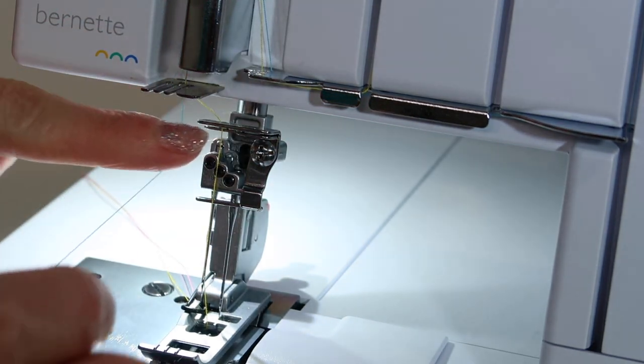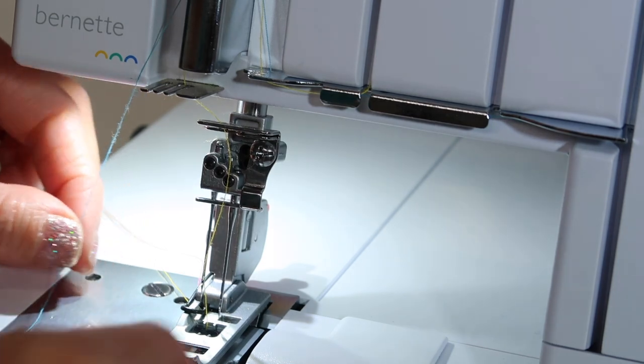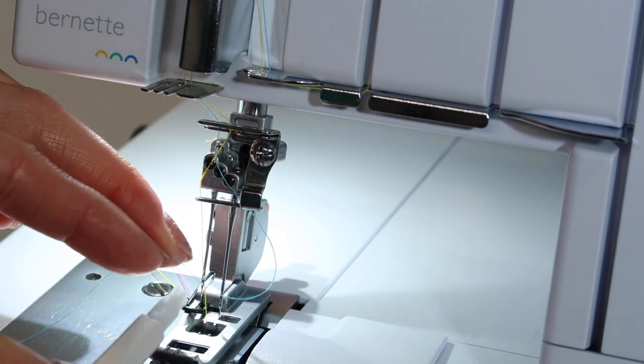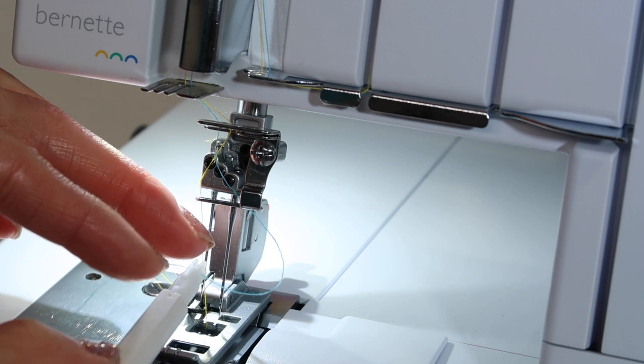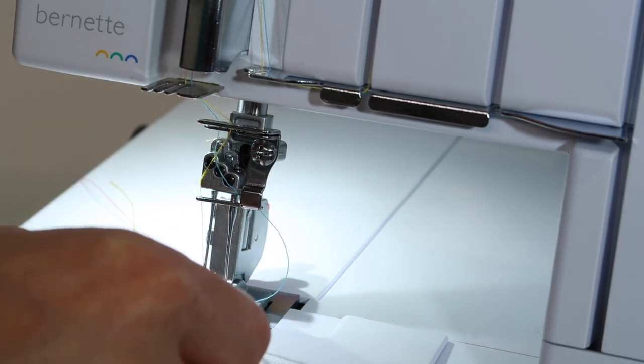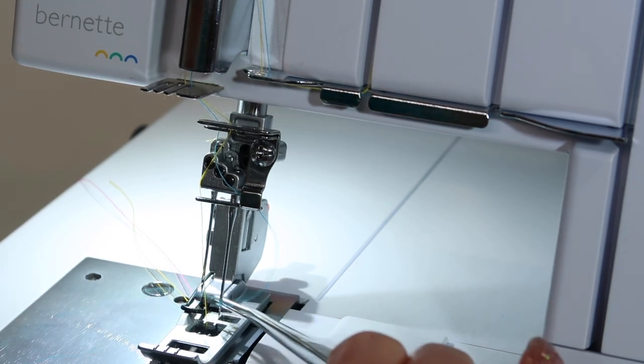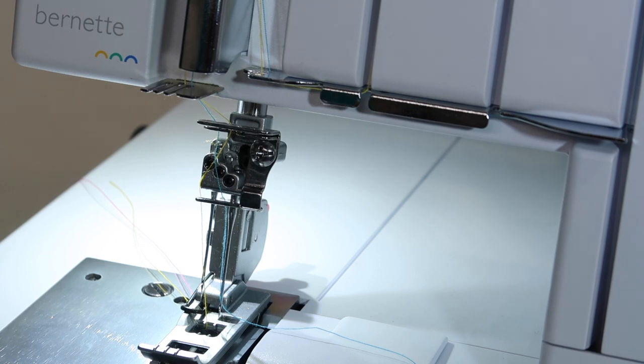I'll use that needle threader one more time to make my life super easy. Remember, find the notch at the top, slide this into its mouth like a horse's bridle, slide down the needle until it pushes itself all the way in, and then just pull the loop through. Super easy way to change the threads as you're working on different fabric colors.